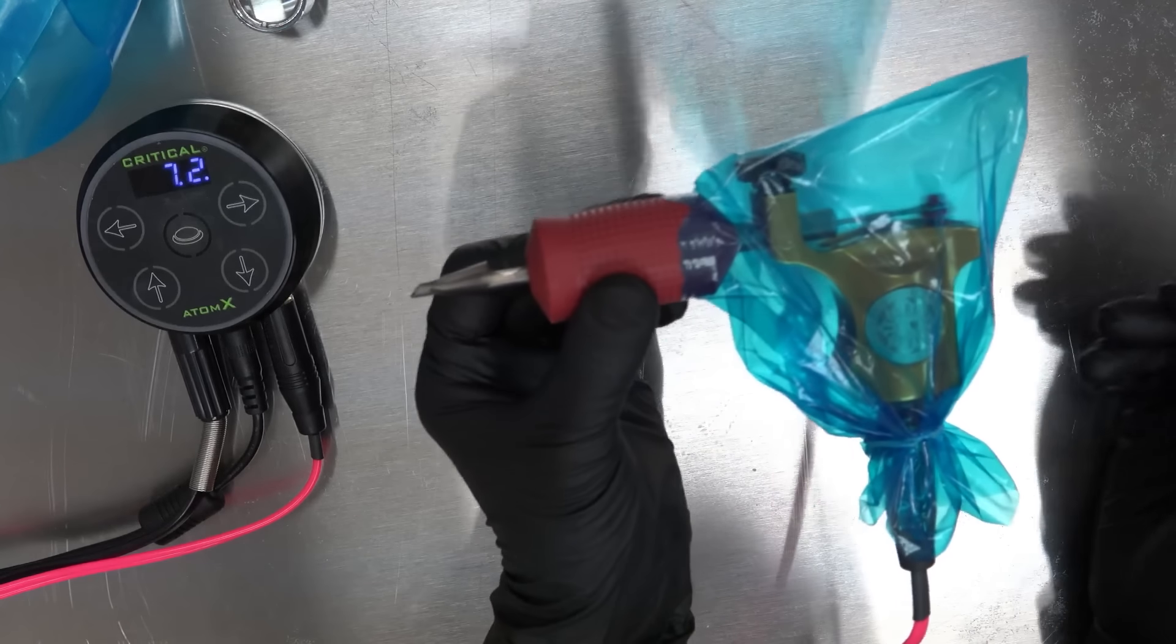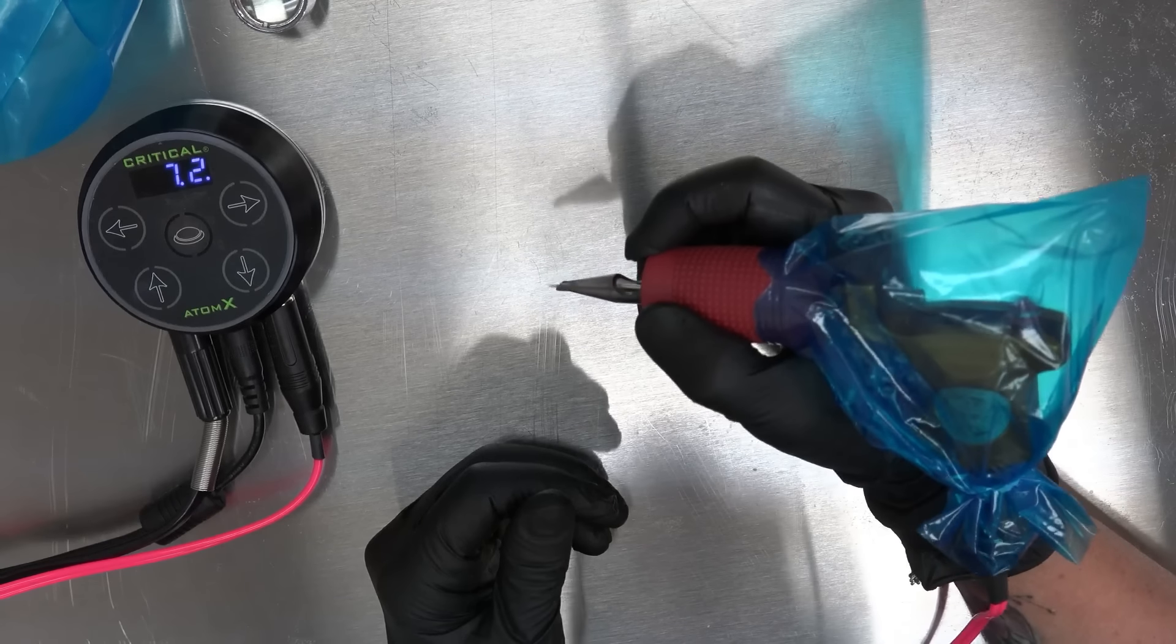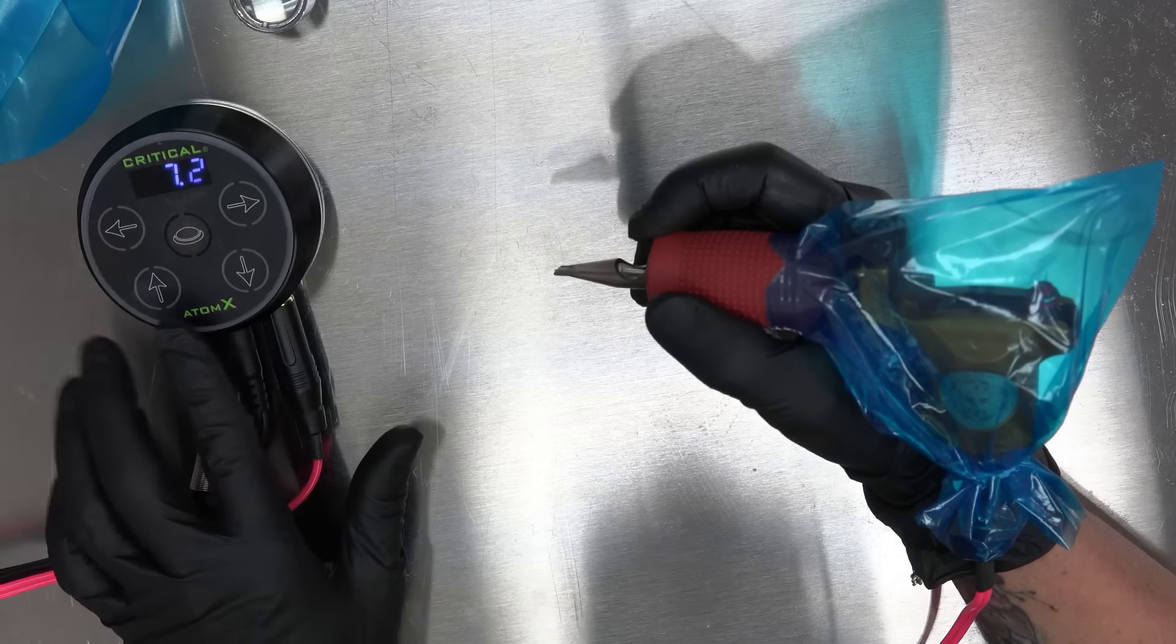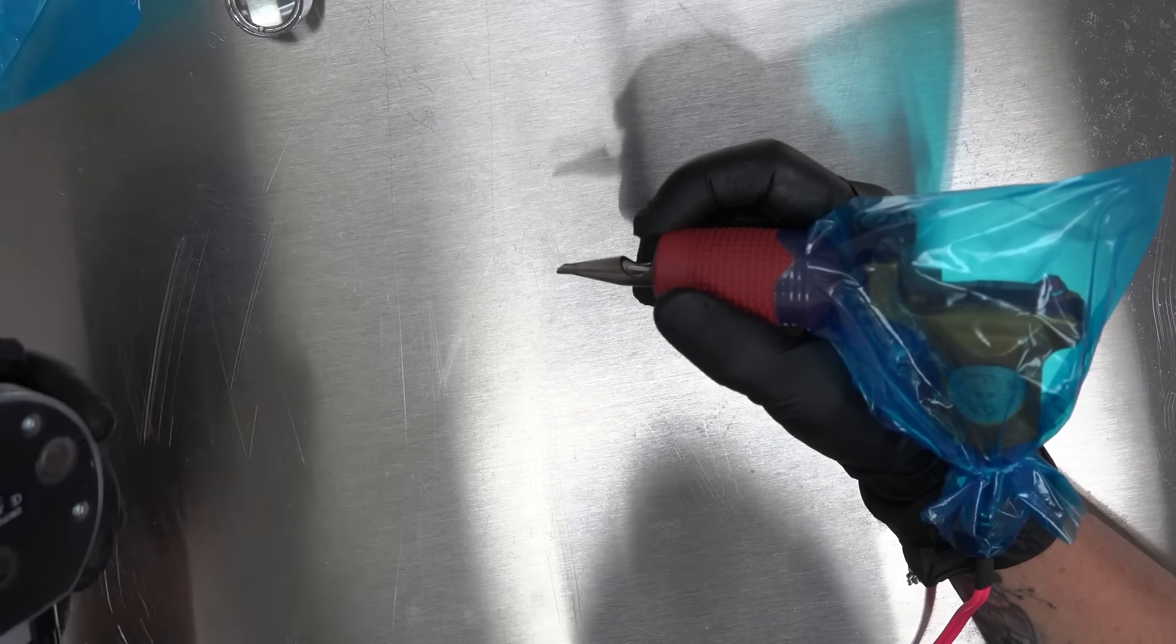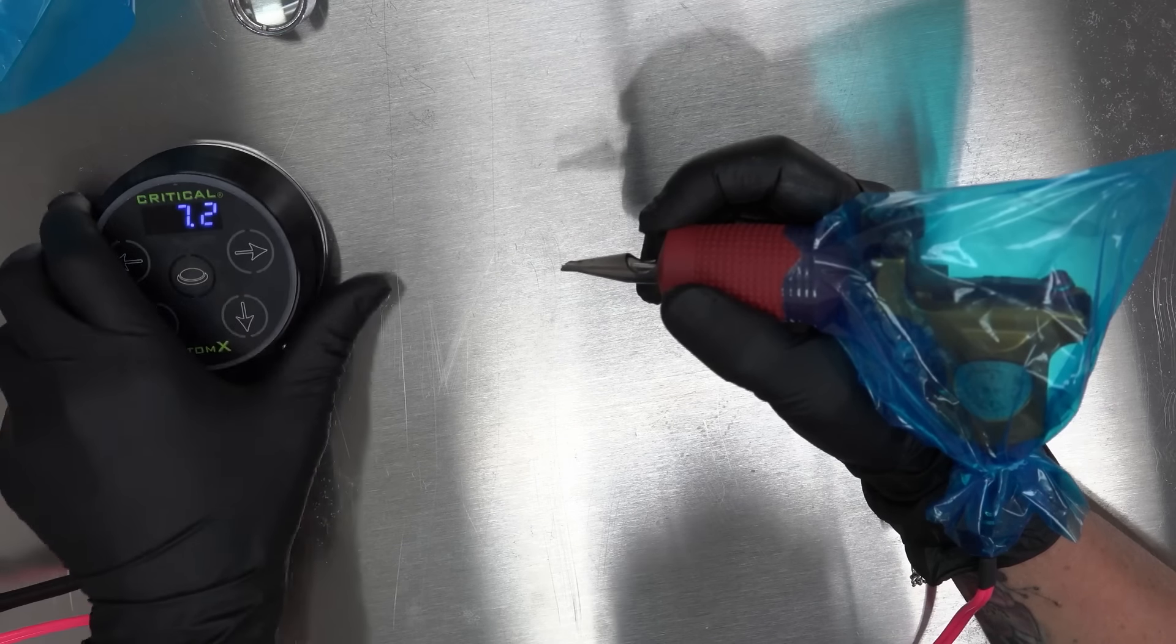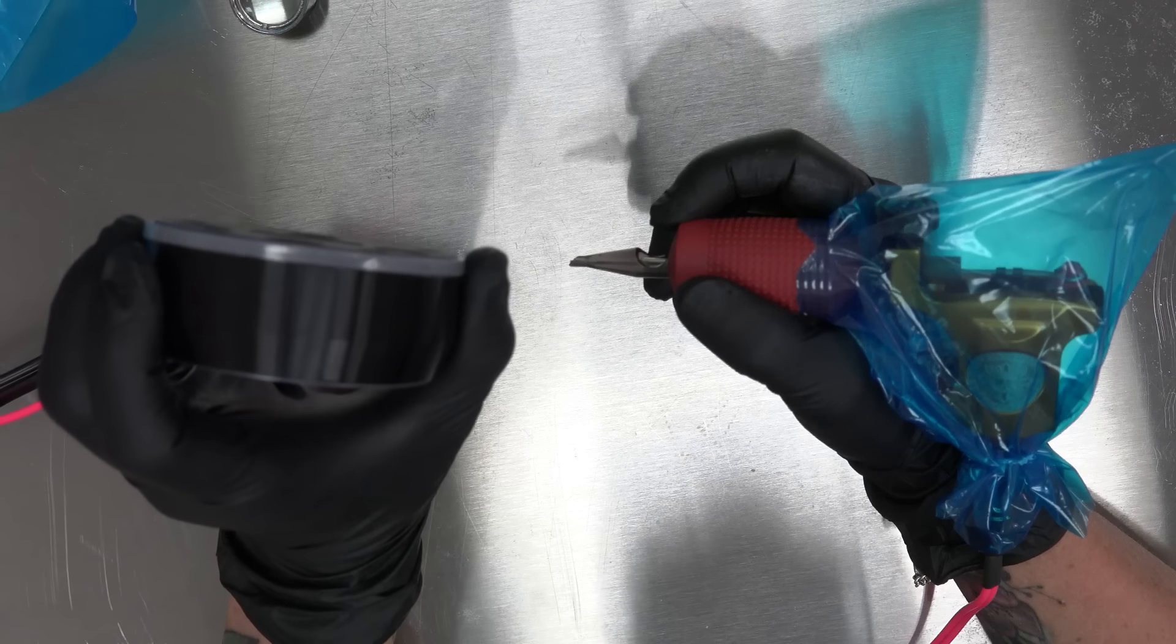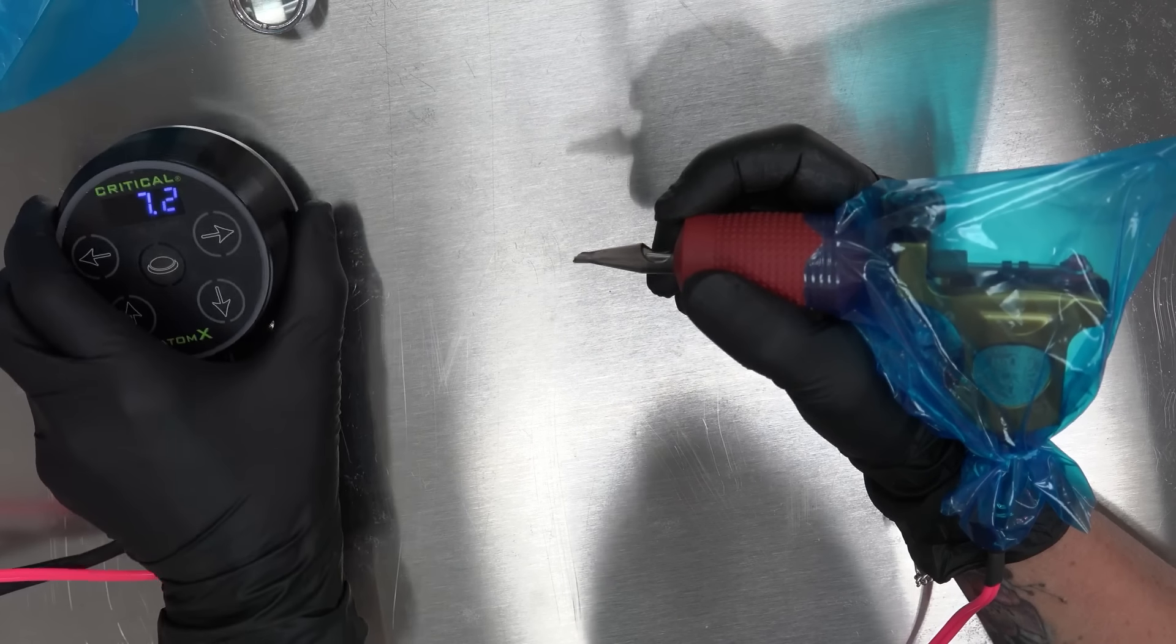And you can see it runs really really good. I love the Critical. The Atom X. This is a great great great little power box. It's magnetic. So you can see it's magnetic. So you can stick it to the side of your stainless steel cart. Or mayo tray. You can stick it on the bottom. If you want. Great.